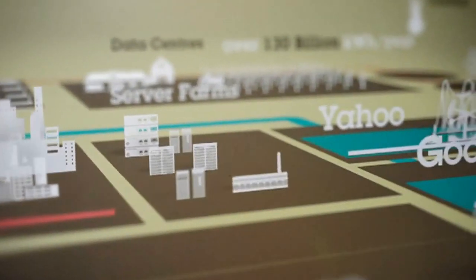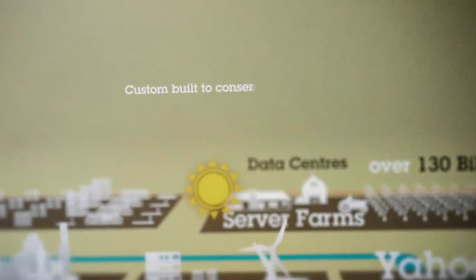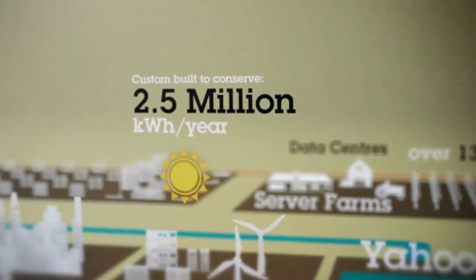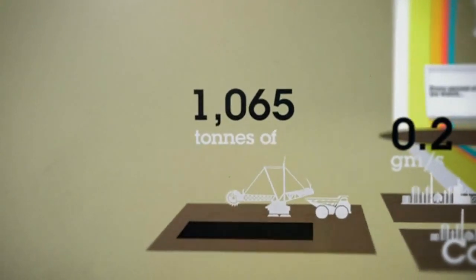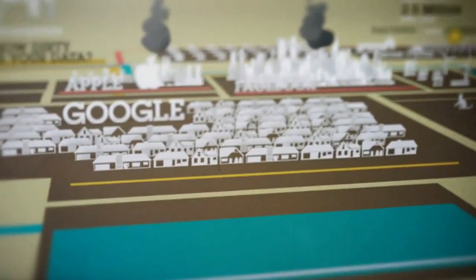Facebook's newest data centre relies heavily on coal, but is also mixing in wind and solar. Custom-built, it can conserve 2.5 million kilowatt hours a year, saving 1,065 tonnes of carbon dioxide. Google's goal is to become carbon neutral.